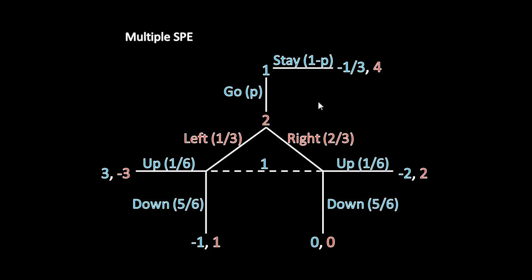Specifically, in any subgame perfect equilibrium, Player 1 goes with probability p and stays with probability 1−p, where p can be any probability. For example, p could be 1 — Player 1 plays go as a pure strategy — or p could be 0 and he plays stay as a pure strategy, or he can mix freely between those two. There are infinitely many of those. Regardless of his choice here, he plays up with probability 1/6 and down with probability 5/6, while Player 2 plays left with probability 1/3 and right with probability 2/3. That's why there are infinitely many subgame perfect equilibria, and that's how you describe them — remembering that p is any probability.